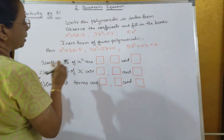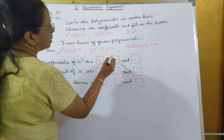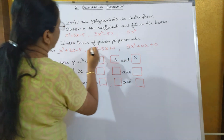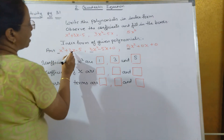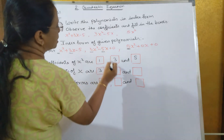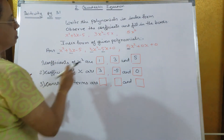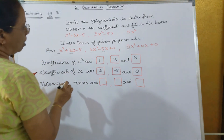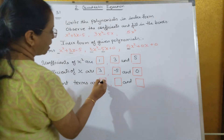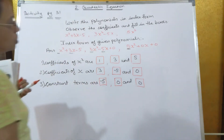Now fill in the coefficients. The coefficient of x² is 1 for the first polynomial, 3 for the second, and 5 for the third. The coefficient of x is 3 for the first, minus 5 for the second, and 0 for the third. The constant terms are minus 5, 0, and 0 respectively.